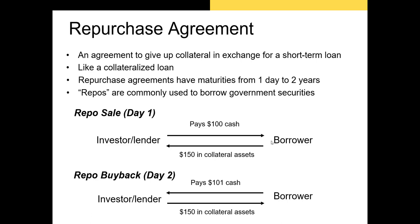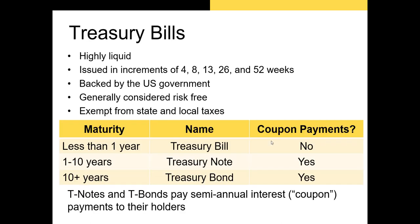There are all kinds of repos out there. The example I gave was the simplest — you can also have reverse repos, which are just the reverse from each party's perspective, and tri-party repos. Now let's talk a little more about T-bills.